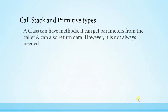A class can have methods that can get parameters from the callers and also return data. However, it is not always needed — we can write a function with a return type of void, and the method is not required to receive any parameter from the caller.